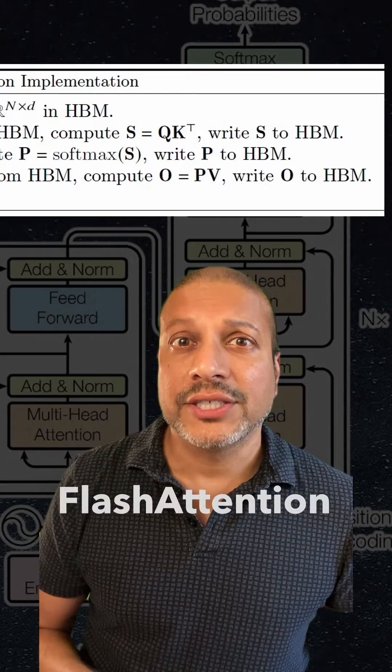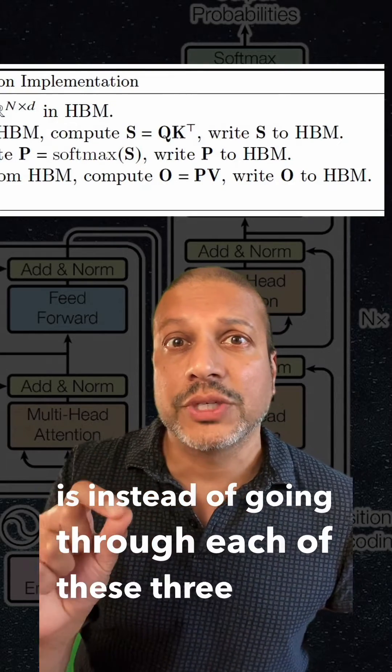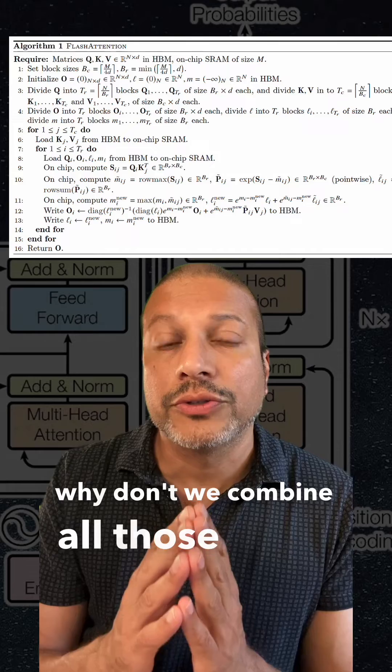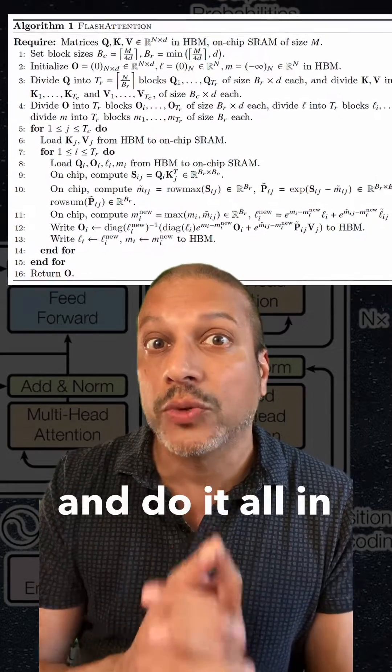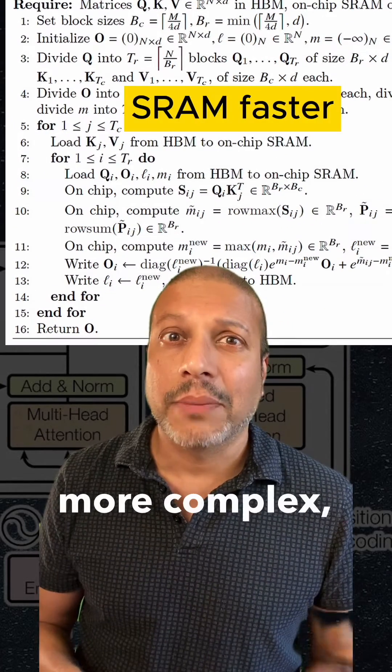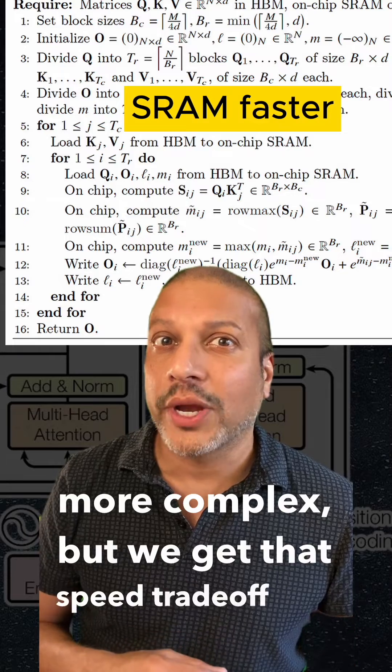The core idea behind flash attention is instead of going through each of these three steps, why don't we combine all those steps inside the kernel and do it all in one step? The algorithm gets more complex, but we get that speed trade-off that we want.